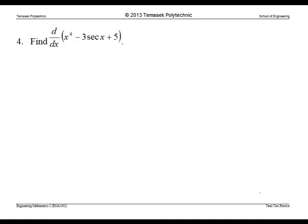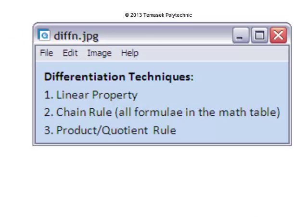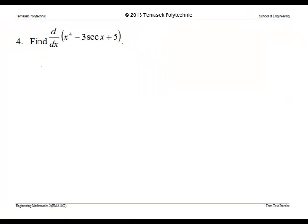Question 4 is the differentiation problem. We shall use linear property as a differentiation technique. This means that we can differentiate three terms separately. Moreover, we can extract 3, the constant, out of the differentiation operation.